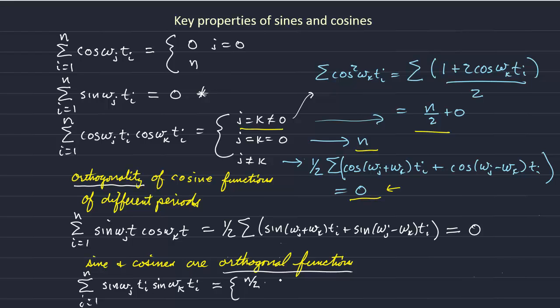That's equal to n over 2 when j is equal to k, when we're looking at the product of two functions with the same period. And it's equal to 0 when j is not equal to k. This describes the orthogonality relationship of two sine functions with different periods.